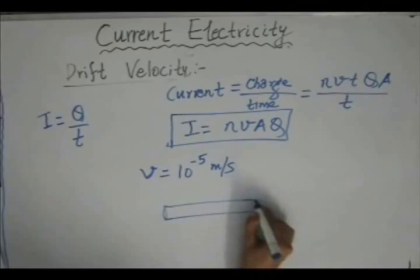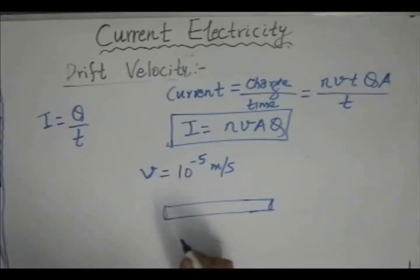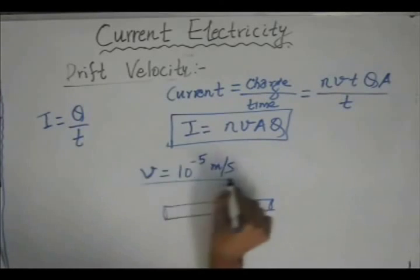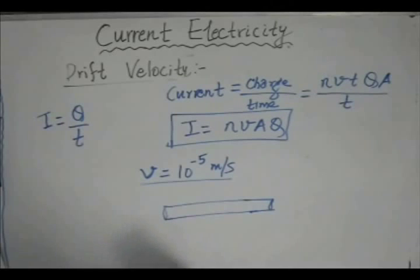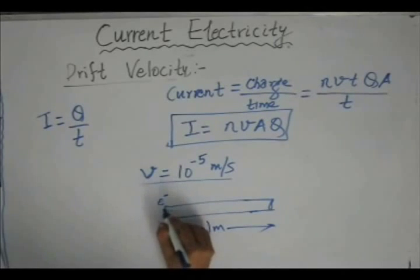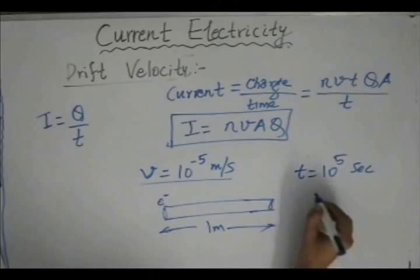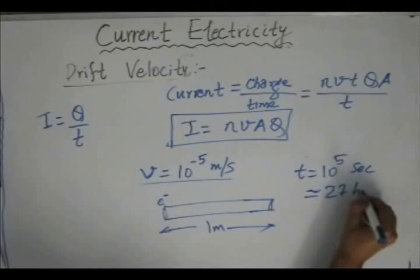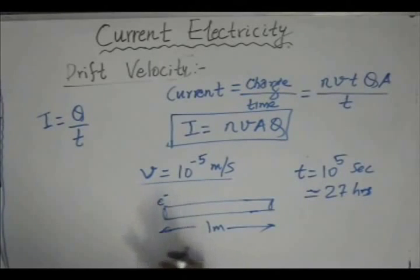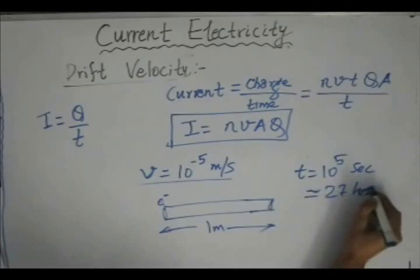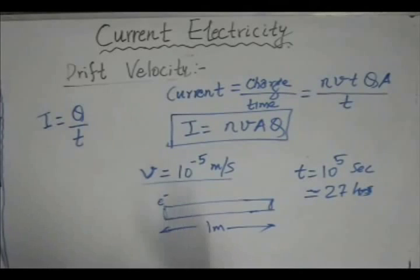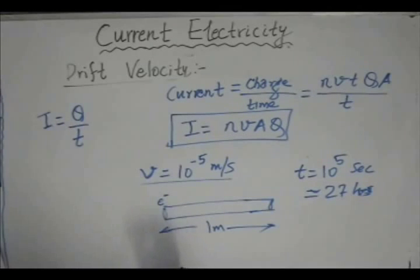Suppose we consider a 1 meter long copper wire placed in some potential difference, with electrons drifting at a drift velocity of 10 to the power minus 5 meter per second. For a 1 meter length of copper wire, the time an electron takes to travel from one end to the other would be 10 to the power 5 seconds, which is almost equal to around 27 hours. So you can imagine just how long an electron takes to travel 1 meter. Isn't electricity an amazing phenomenon — even though an electron takes about 27 hours to travel 1 meter, we can still observe the bulb glowing almost instantaneously when we switch it on.